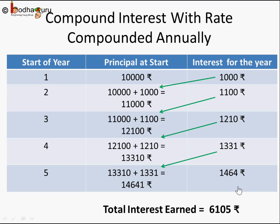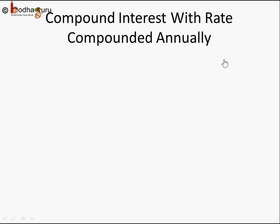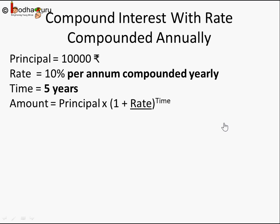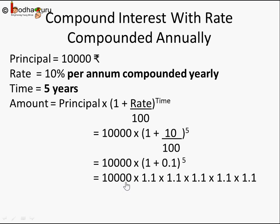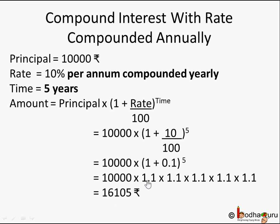The total compound interest earned over 5 years is 6,105 rupees. Using the formula — Principal × (1 + Rate/100)^Time — we put in 10,000, rate = 10%, time = 5 years. We get 10,000 × (1.1)^5 = 16,105 as the amount, and interest = amount − principal = 6,105. This confirms what we learned in the last lesson.